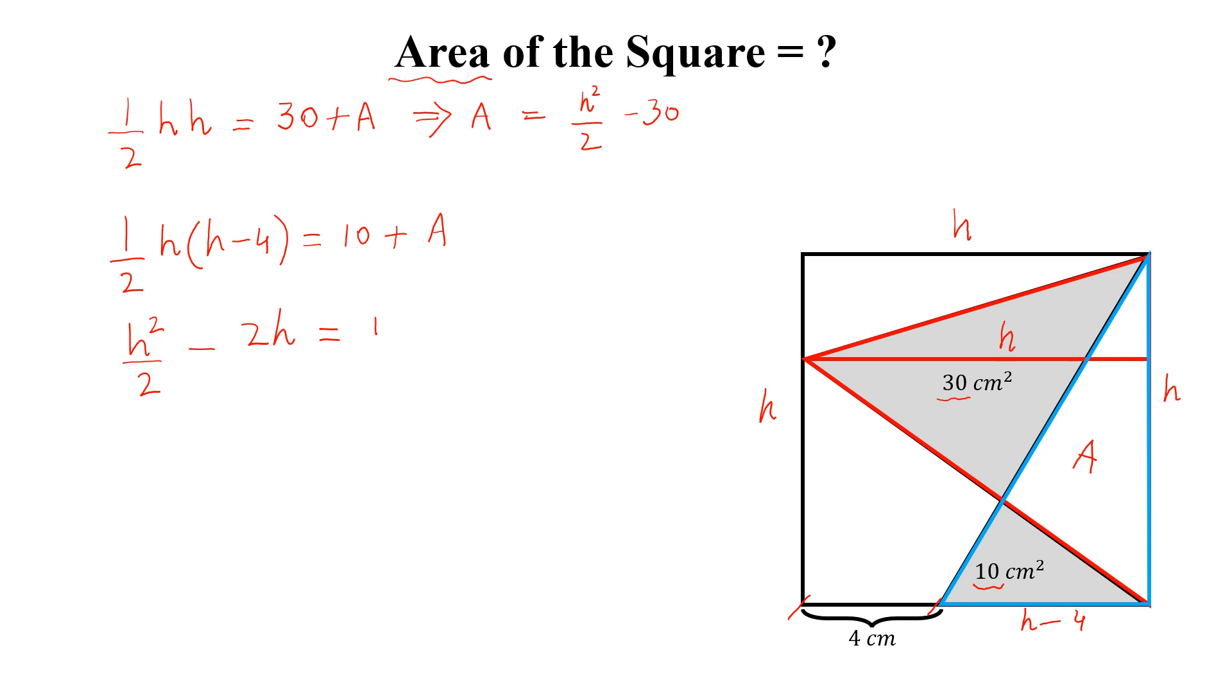So this is 10, and A is h square by 2 minus 30. So h square by 2 is cancelled with this h square by 2, and if we simplify this we get 2h.